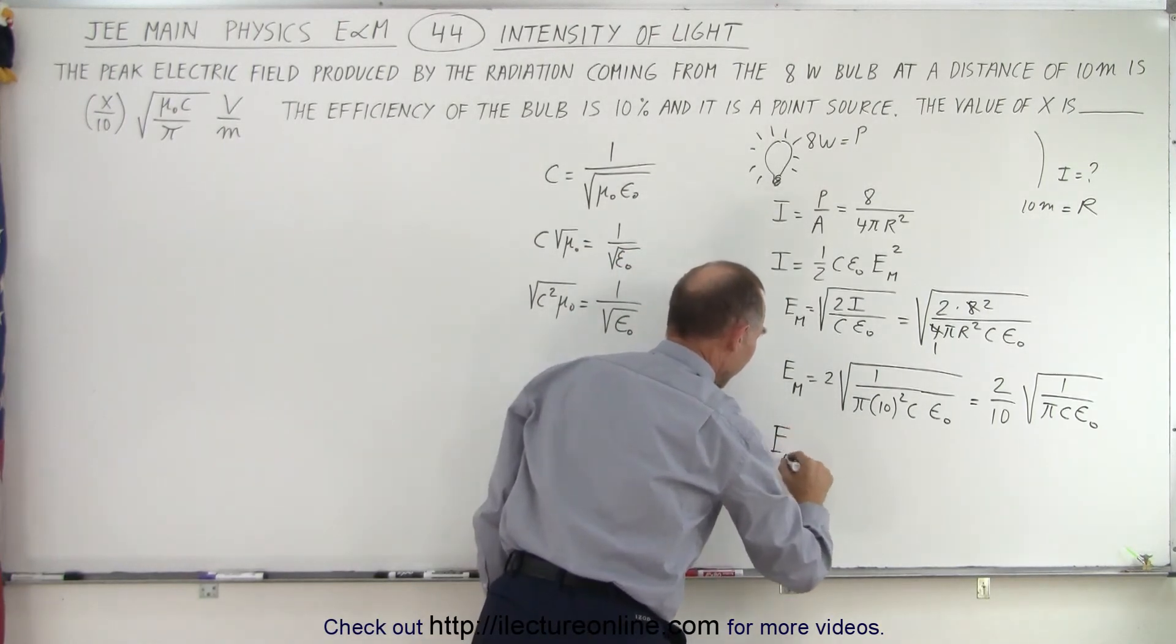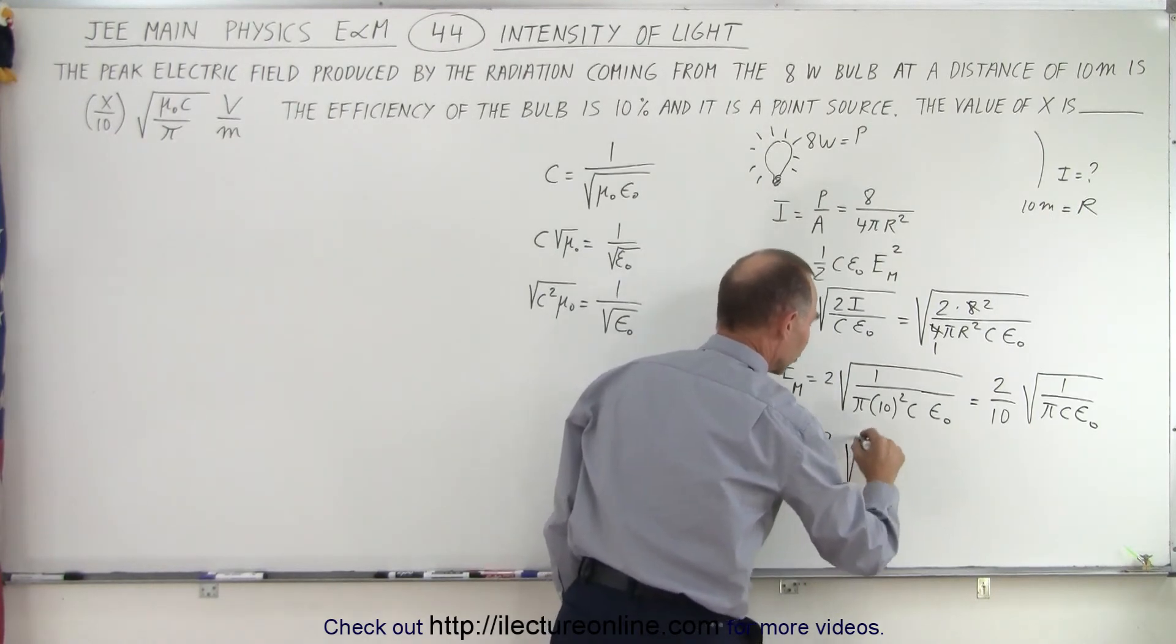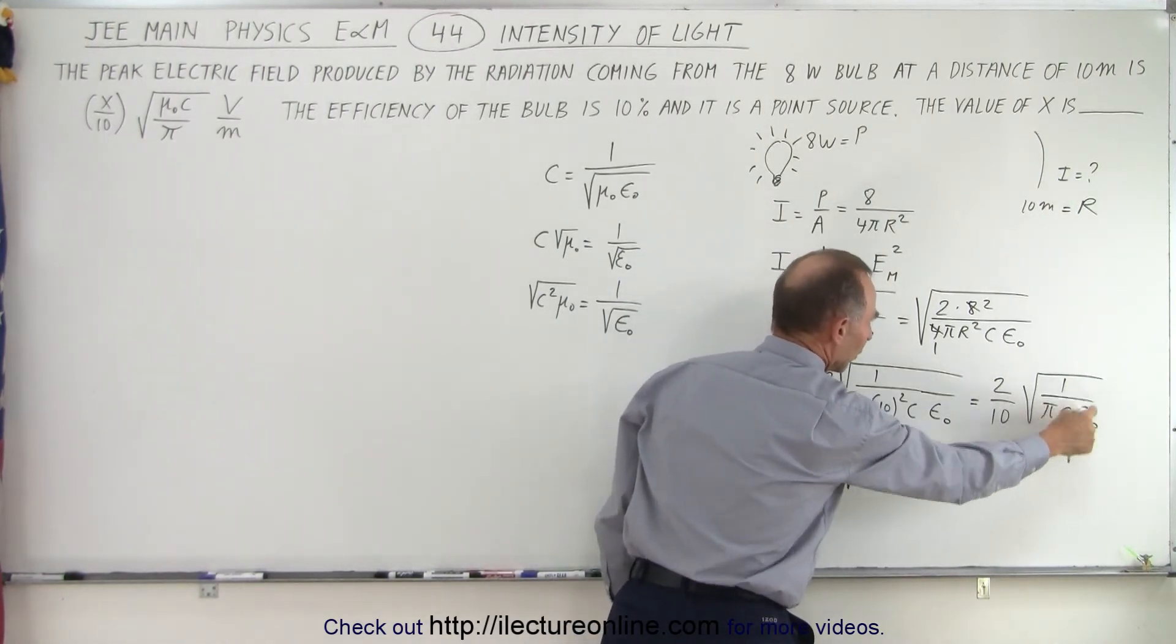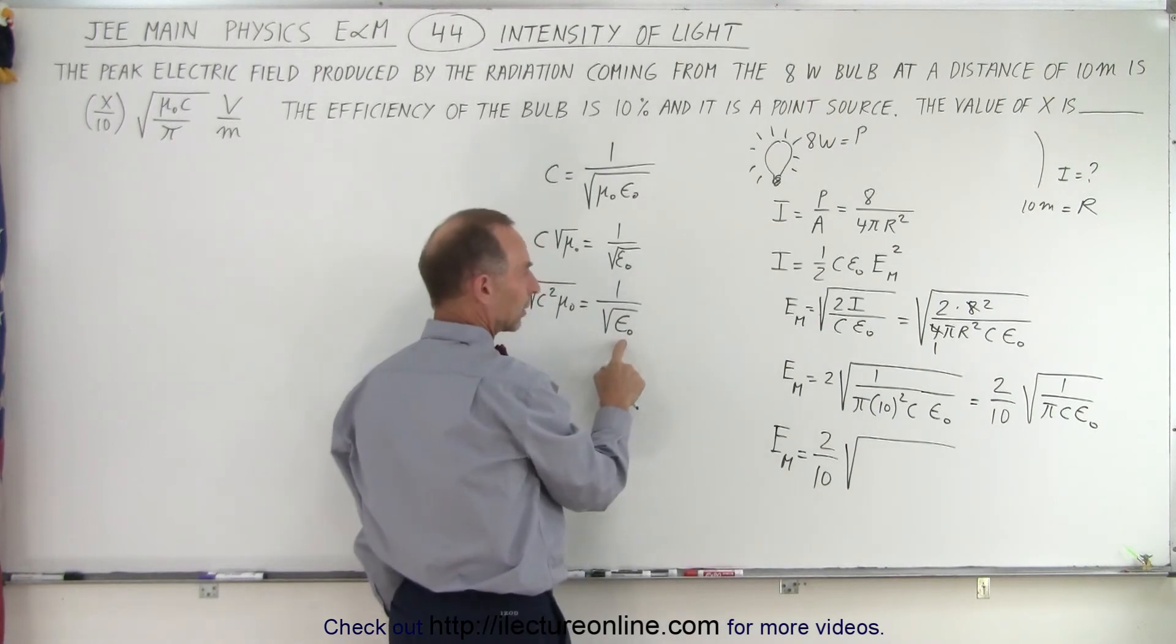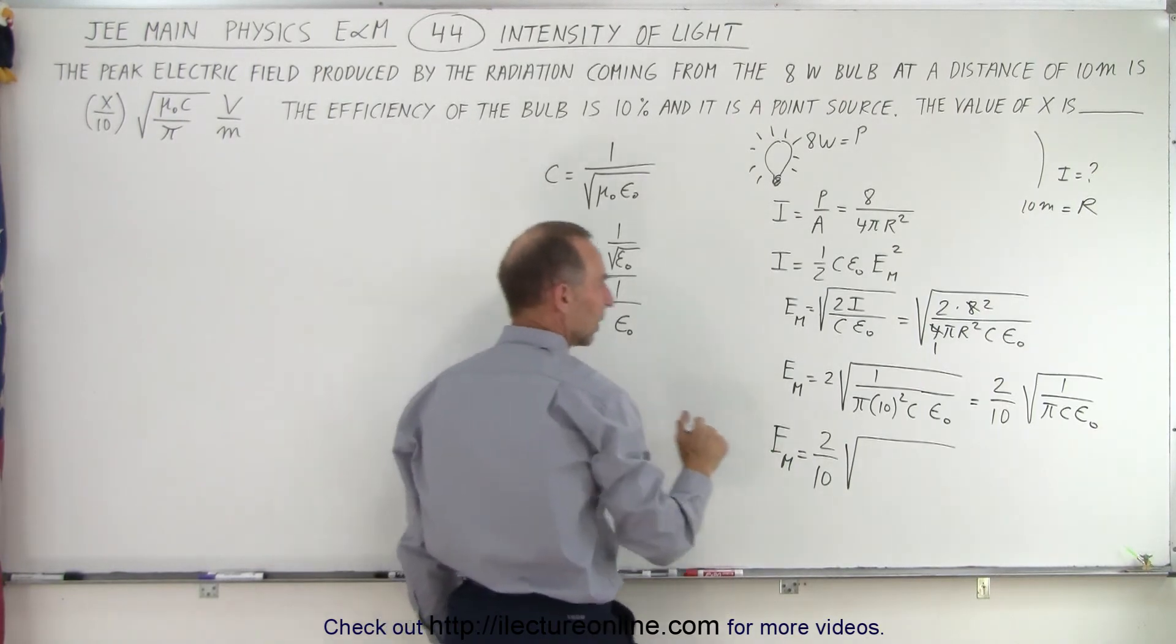So we have e sub m, the maximum electric field intensity, is 2 over 10 times the square root of, so instead of 1 over epsilon sub naught underneath the radical, I can go ahead and write it like this, I can replace that by c squared mu sub naught. So that's c squared mu sub naught divided by pi times c.